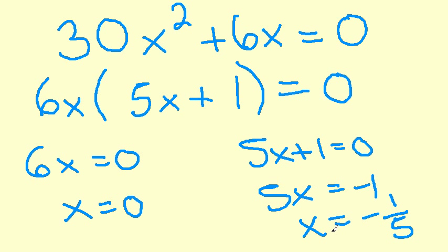So we have two answers. x is 0 or x is negative 1 over 5. I'm sorry it should be an and. We have two answers because this is a parabola. So 0 and negative 1, negative 1 fifth.